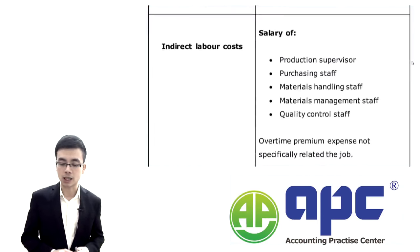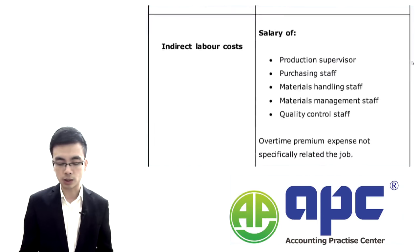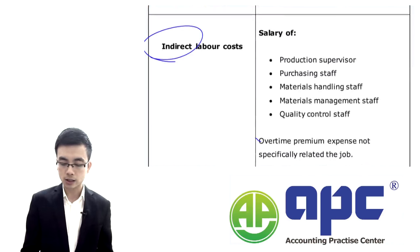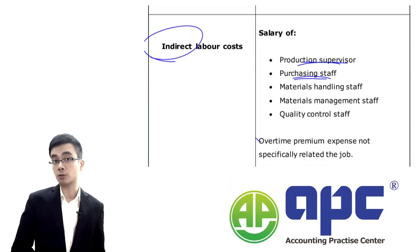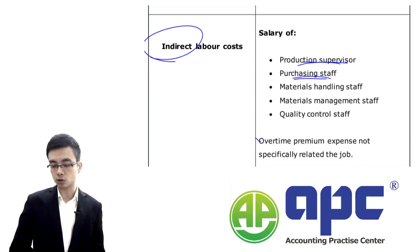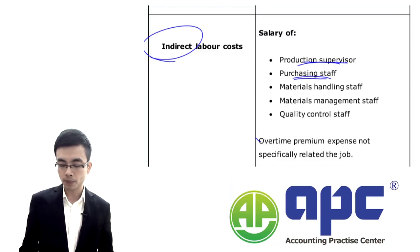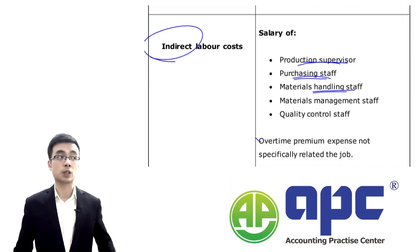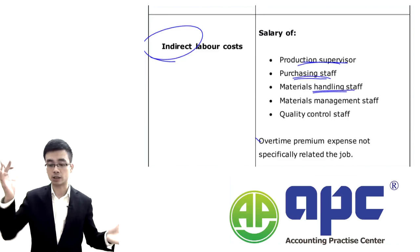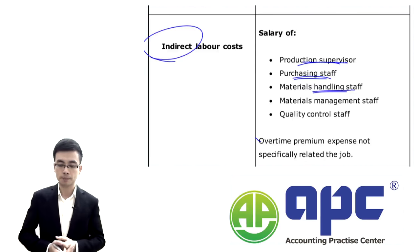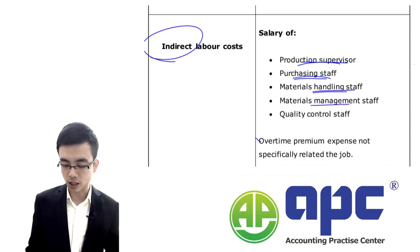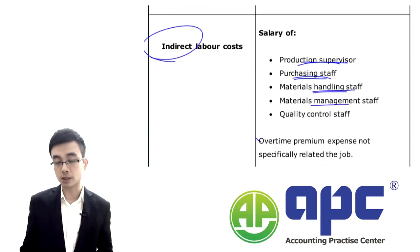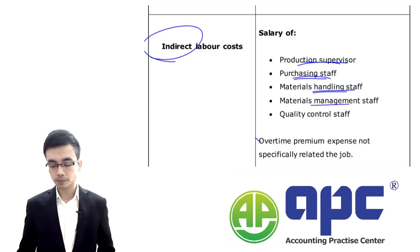Labour costs can also be indirect. Examples include the production supervisor salary, purchasing staff or procurement manager salary, materials handling staff salary — moving material from one area to another — and materials management staff salary, because these tend to be fixed.